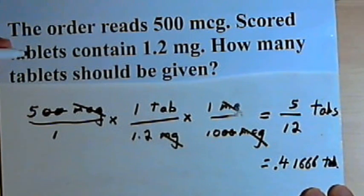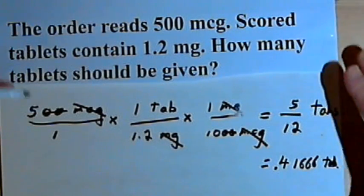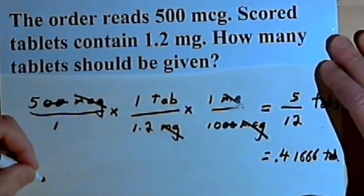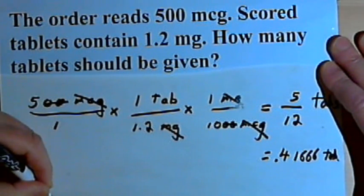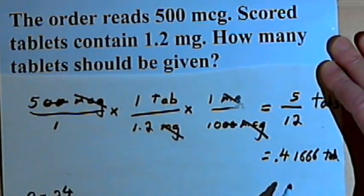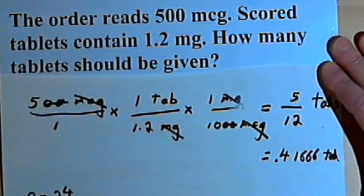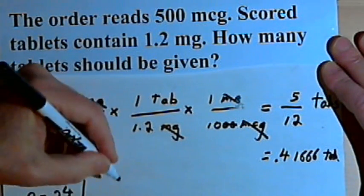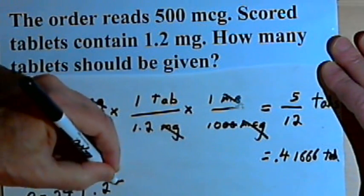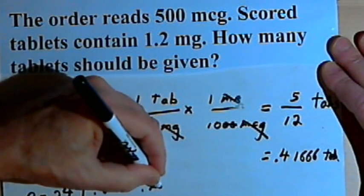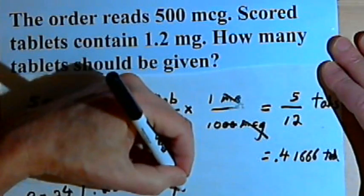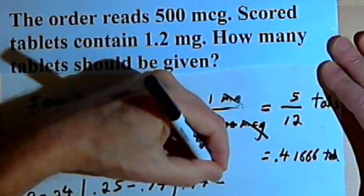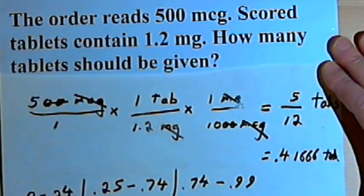Now it says these are scored tablets. So let's remember the rules for scored tablets. If it's between 0 and 0.24, in other words, if the decimal part that we have is between 0 and 0.24, we round down. If it's between 0.25 and 0.74, then we give a half a pill. If it's from 0.74 up to 0.99, then we give a whole pill.